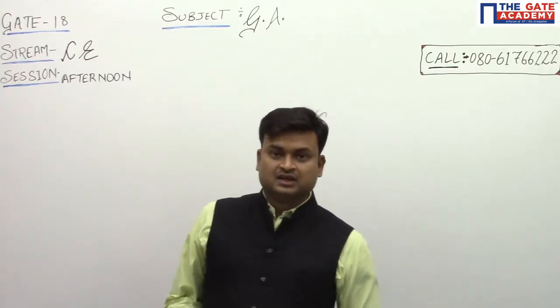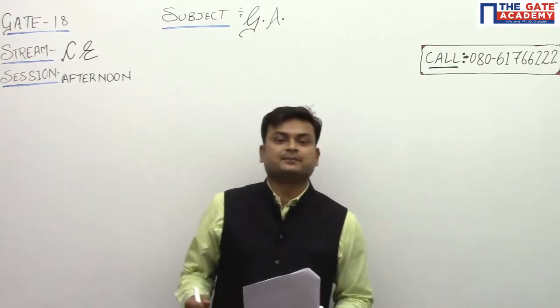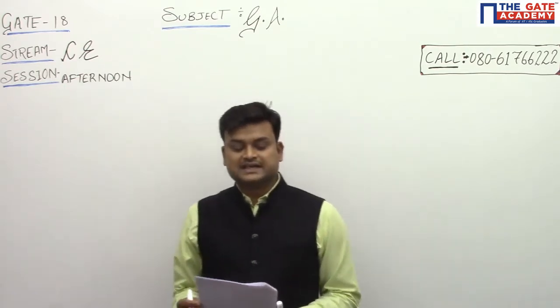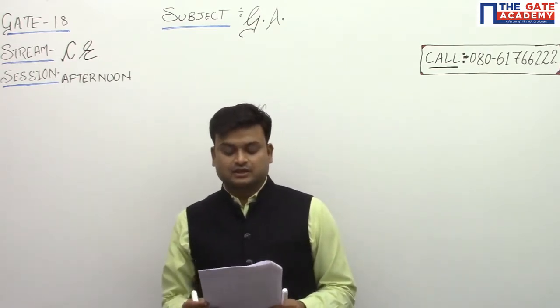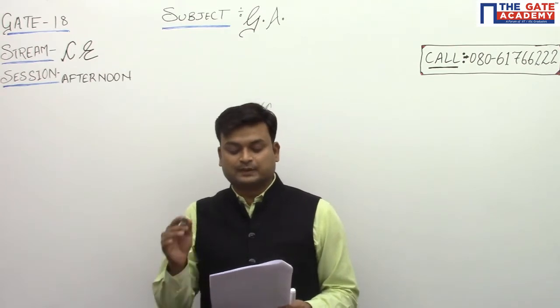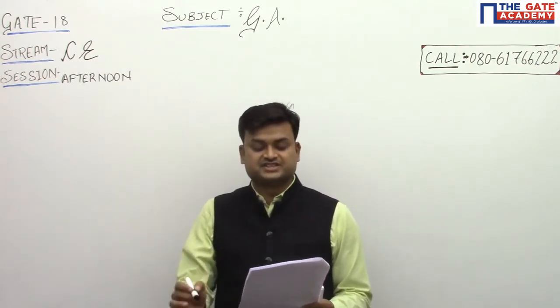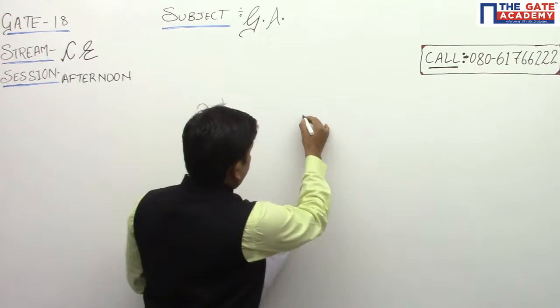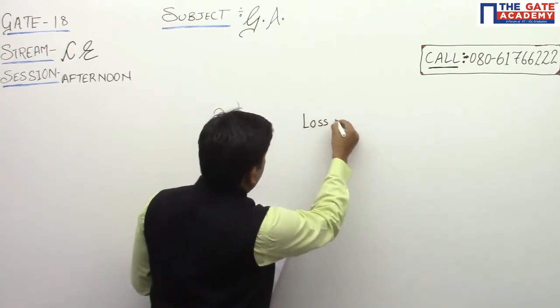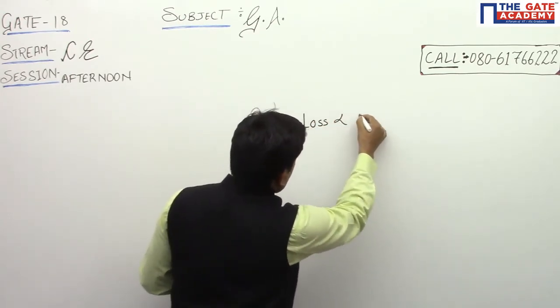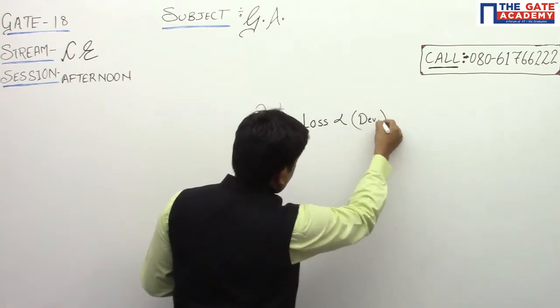Let's solve the next question from Civil GATE 2018 paper afternoon session. The data is in a manufacturing industry, loss is usually taken to be proportional to the square of the deviation from target. So loss is proportional to deviation square.